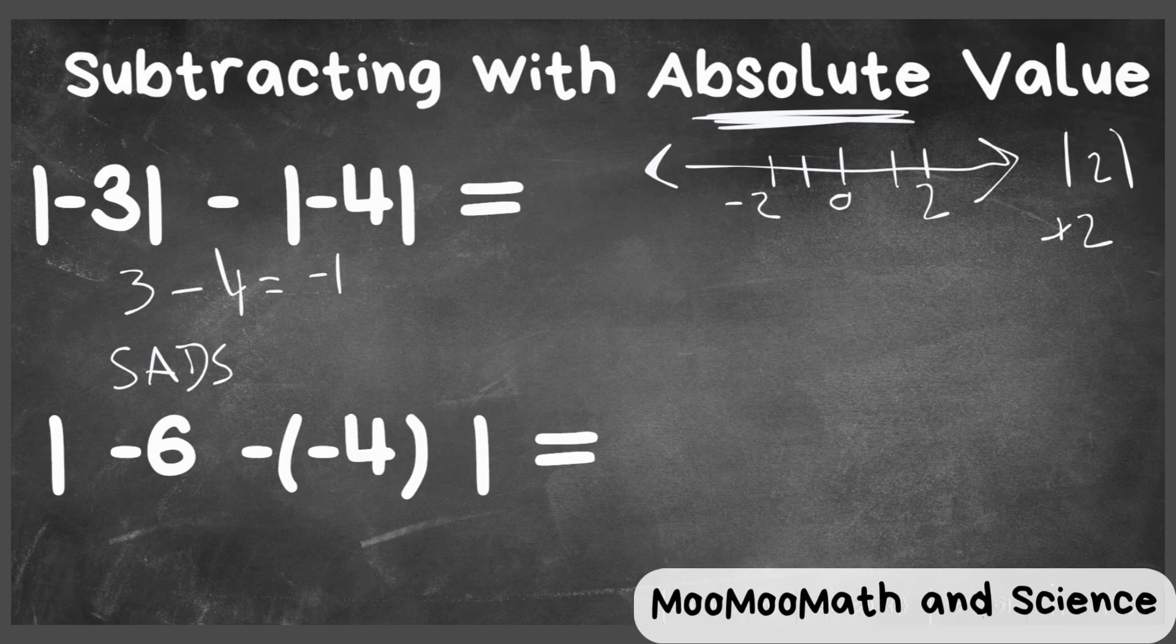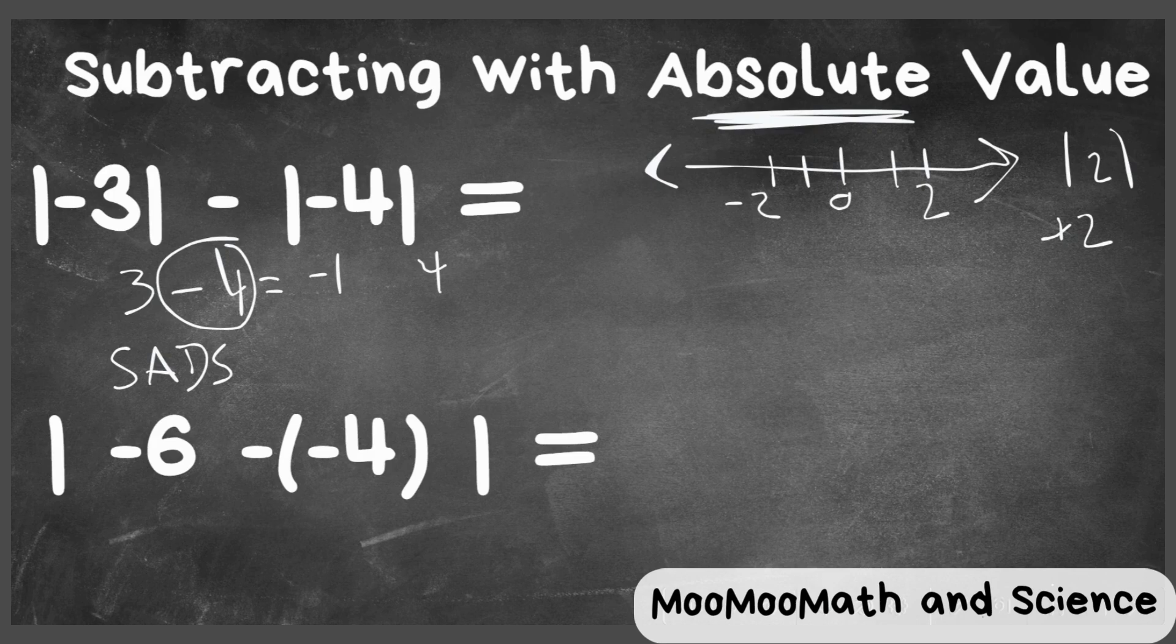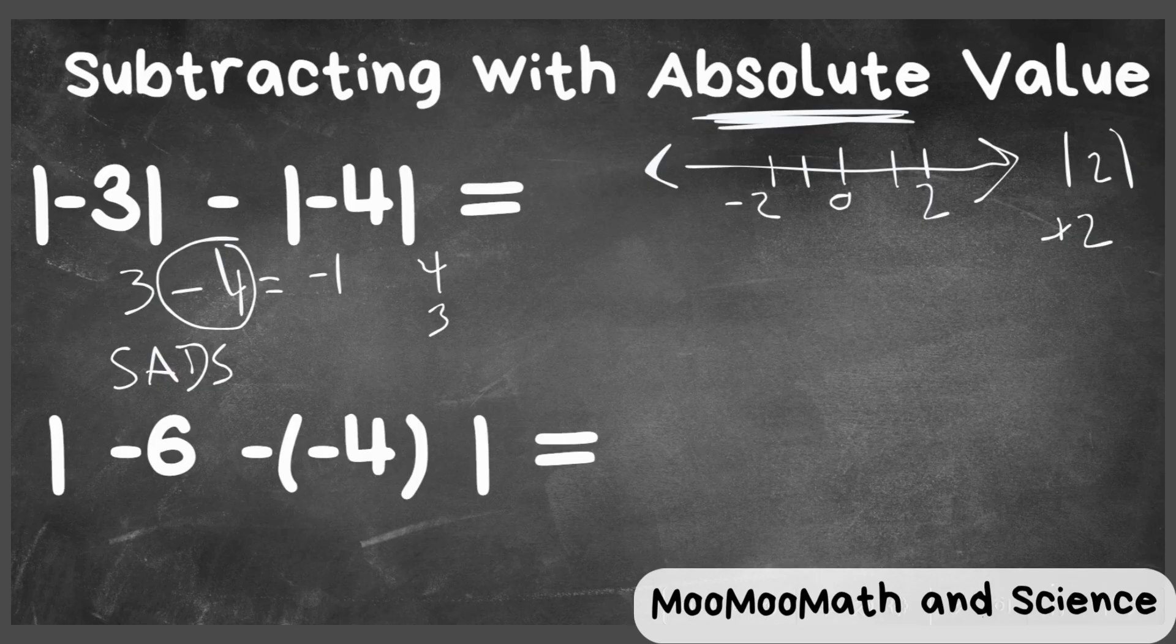We have different signs because, technically, this negative is attached to this four. I'm going to put the larger number on top, and then the smaller. I'm going to subtract: four minus three is one, and then I take the sign of the larger number, which is negative. Two ways to look at it.